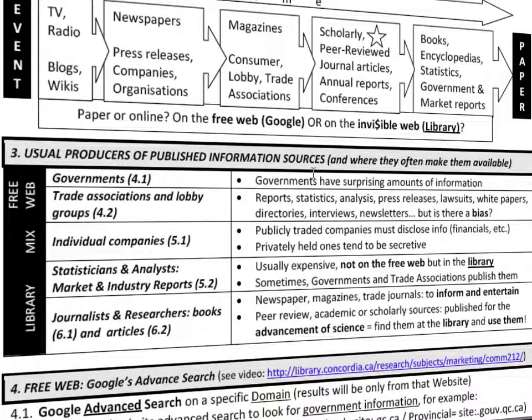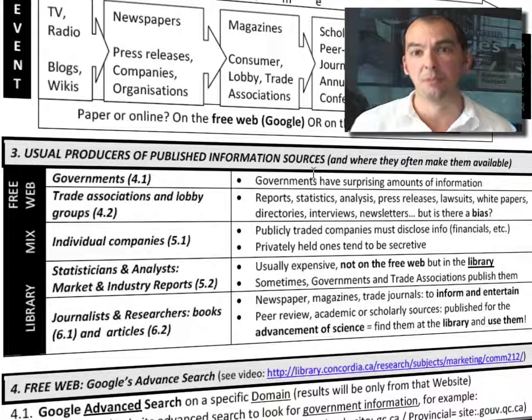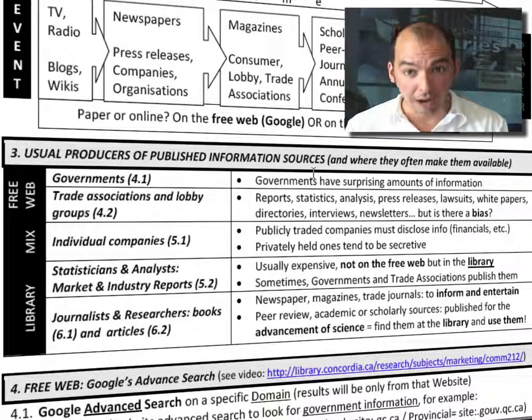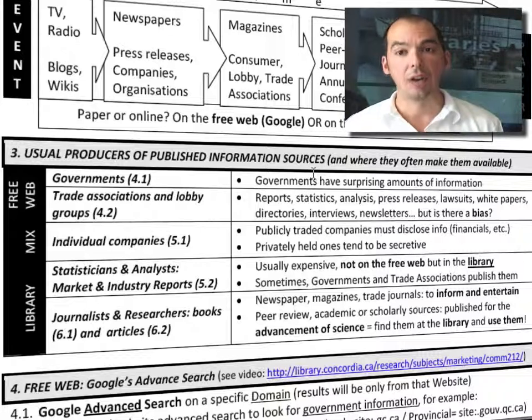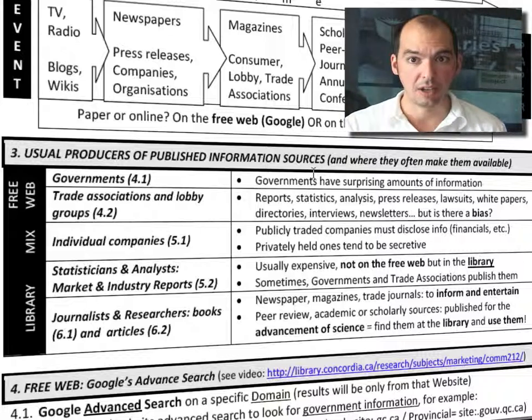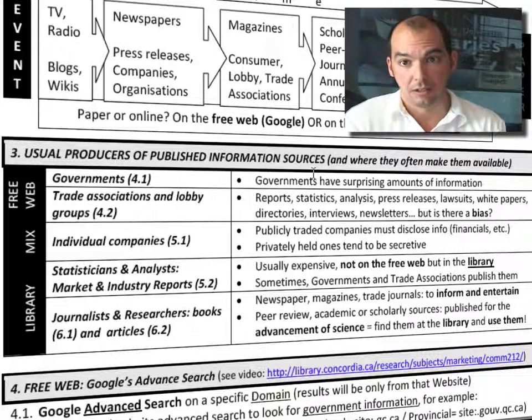First, you have governments. Governments compile a lot of statistics and are responsible for different areas of business and society. You can actually get a lot of information from government websites. Anything that you need a permit for — from the city, the federal government, or the provincial government — chances are they're compiling statistics on a yearly basis to assess how companies receiving those permits are working for society.